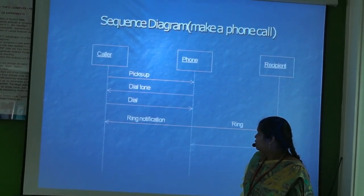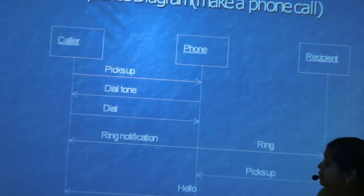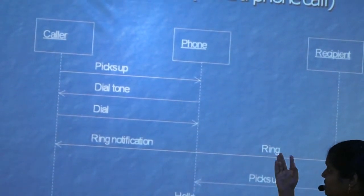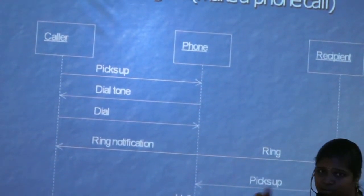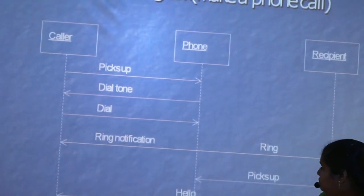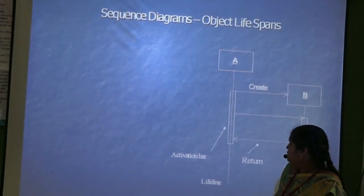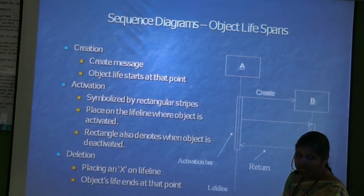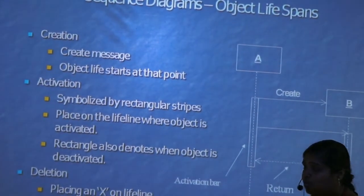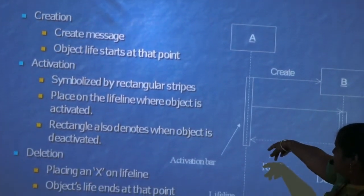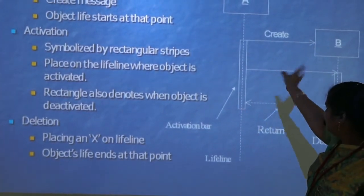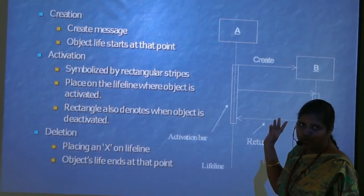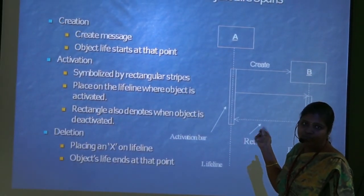Here is an example for the sequence diagram. The caller, phone, and recipient are the software objects. These are the messages which connect the caller as well as the phone — this is an example of picking up a phone call. The dashed vertical lines are the object lifelines. Object A creates object B — the rectangular shape on the lifeline is called the activation box. The return type is represented by a dotted line. The cross symbol represents the deletion of a particular object.